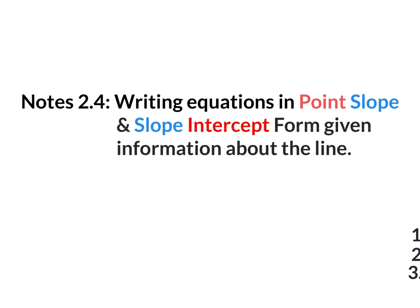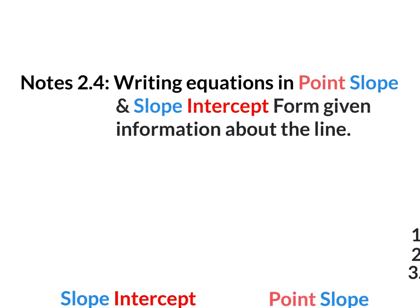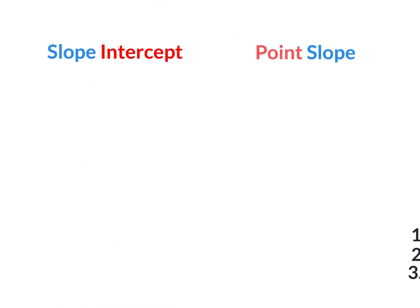Same thing with equations: if it's in a certain form, the equation is organized in a certain way. Hopefully we remember that slope-intercept form is y equals mx plus b. We call it slope-intercept form because if it's organized in this manner — if you have y by itself equals a number times x plus or minus another number — you'll be able to clearly see the slope and the y-intercept.